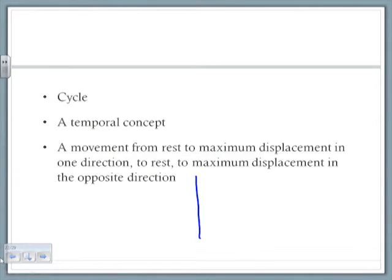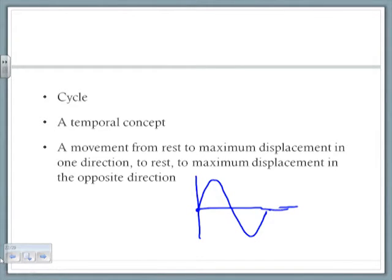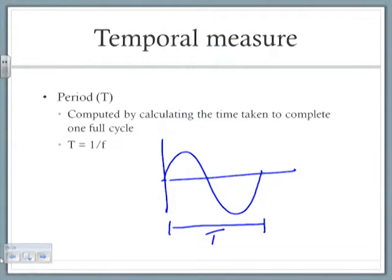Let's draw one cycle right here. If I were to trace just the movement of one particle: from point of rest to maximum displacement, to point of rest, to maximum displacement in the other direction, to point of rest — that's going to be one cycle. So this is a point of rest, point of maximum displacement in one direction to rest again, point of maximum displacement in the other direction to rest again, is one cycle.